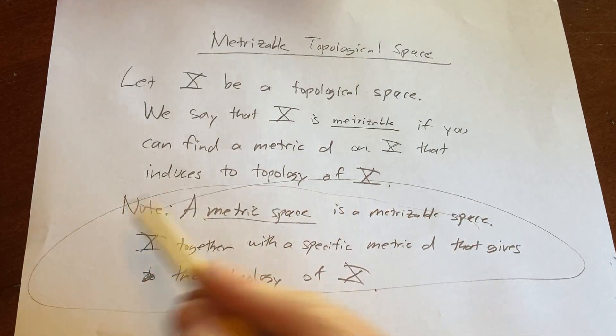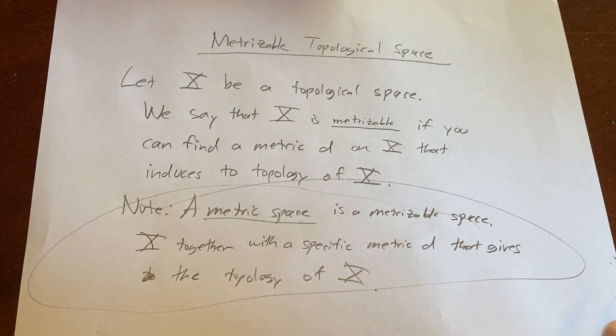It's already a metric space with a metric, so it's already metrizable because it has that metric d that gives the topology of X. I hope this has been helpful, take care.